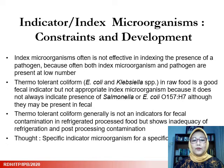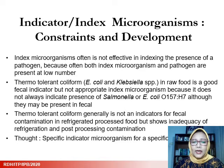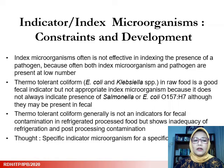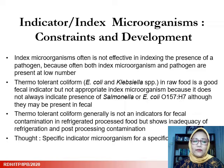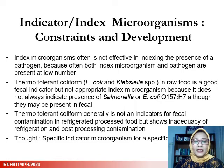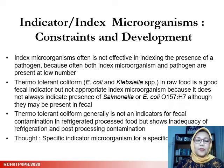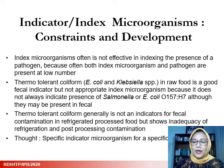In this last section, I would like to present the constraints and development of the concept of index microorganisms. Index microorganisms are often not effective in indexing the presence of pathogens because both are usually present at low numbers. In addition, fecal coliform in raw food is a good fecal indicator but is not an appropriate index because it does not reliably indicate the presence of Salmonella or E. coli O157:H7. Thermotolerant fecal coliform is also not a good indicator for fecal contamination in refrigerated processed foods, though it may indicate inadequate refrigeration or post-processing contamination. This has led to the thought that we may need indicator microorganisms specific to particular foods.